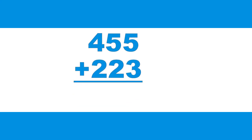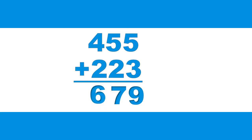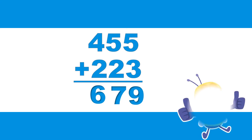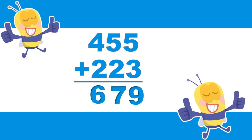Let's do another example, this time without regrouping. 455 plus 223. 5 ones plus 3 ones gives 8 ones. 5 tens plus 2 tens gives 7 tens. 400 plus 200 gives 600. Our sum is 678.